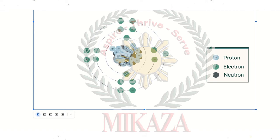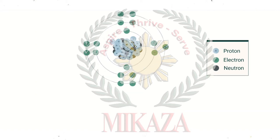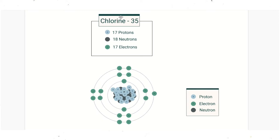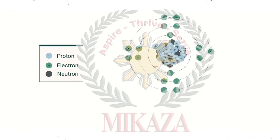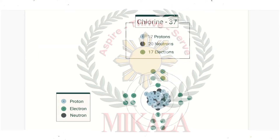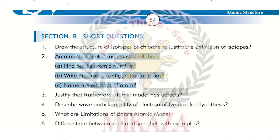We have 17 electrons, 17 protons, and 18 neutrons in the first isotope. The second isotope has 20 neutrons. We can see that the atomic structure is almost similar, but the number of neutrons is changing. This justifies the isotope definition: the mass number differs due to the neutron difference, while both isotopes of the same element have the same atomic number.